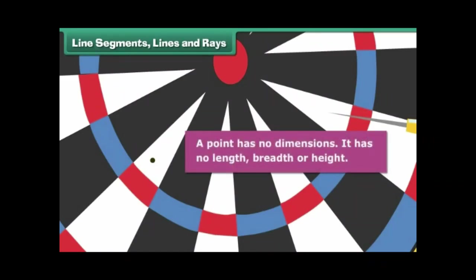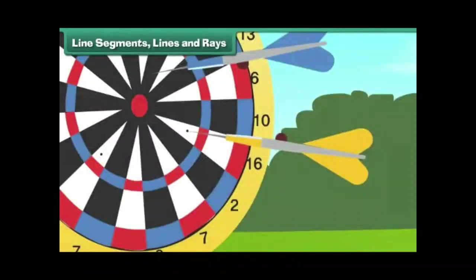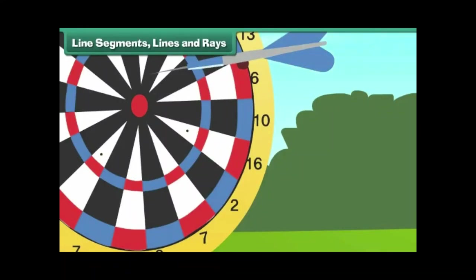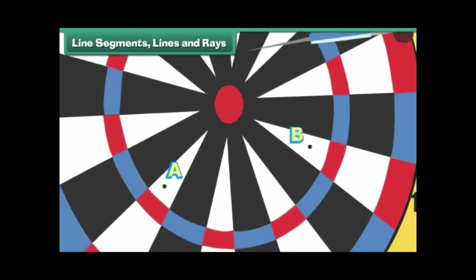The mark is called a point. A point has no dimensions - it has no length, breadth, or height. Let us remove another dart to reveal another point.